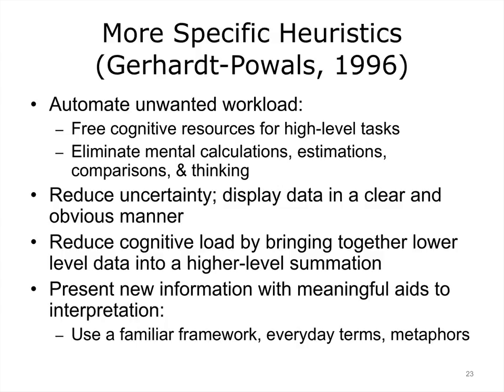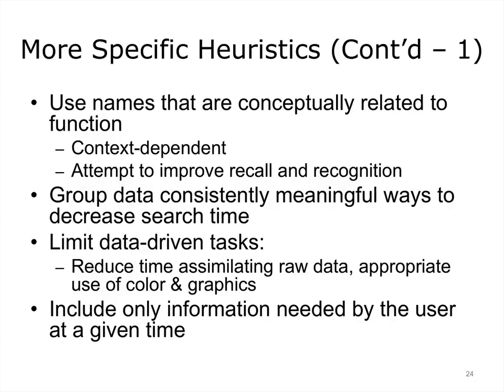There have been several efforts to make Nielsen's heuristics more specific or tailored to a particular context. The heuristics proposed by Gerhardt-Powels are focused on judging a system in terms of how much energy expenditure is necessary to perform a set of tasks — for example, judgments are made about automating repetitive tasks. Gerhardt-Powels also suggested heuristics for grouping items effectively to reduce search and minimizing cognitive load by aggregating lower-level data into summaries. There are several ongoing efforts to introduce summaries to aggregate patient data in electronic health records, which can save unnecessary search time sifting through different electronic documents such as lab reports.